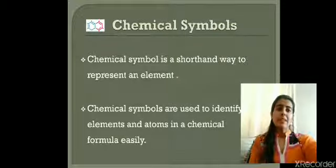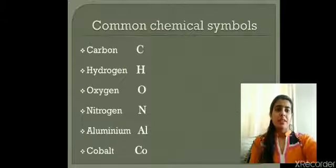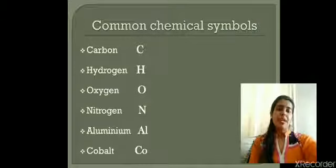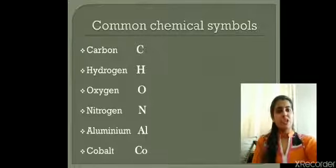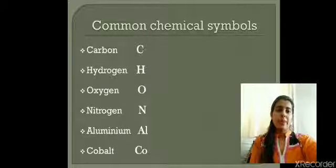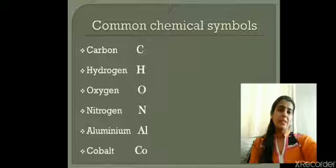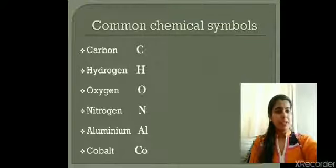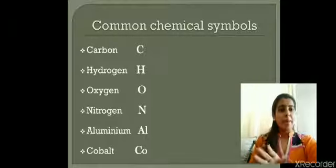While writing chemical symbols there are certain rules. For carbon we use capital C, for hydrogen capital H, for oxygen capital O, for nitrogen capital N. You can see a common trend: in writing chemical symbols we always use the first letter of that element, and that first letter has to be written in capitals.